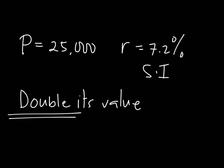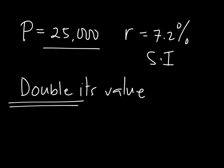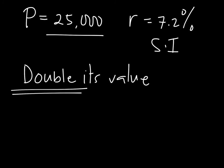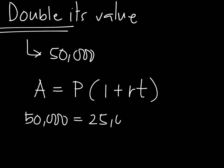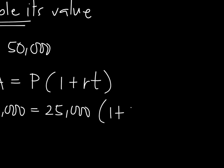Now, you could think of that as the double its value. That means you need a future value equal to 25,000 times 2, which is 50,000. So applying the formula, the future value formula A is P times 1 plus RT, that will be 50,000 equals 25,000 times 1 plus the rate is 0.072 times the time.